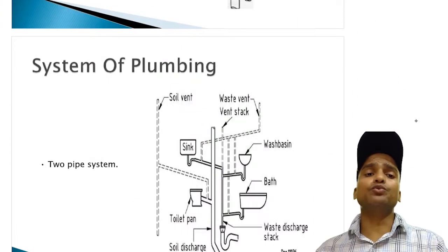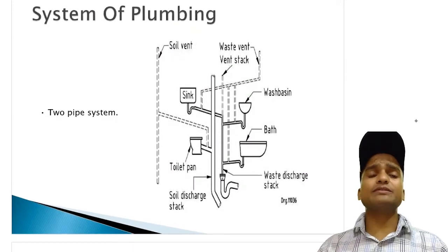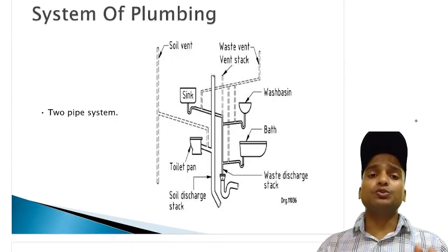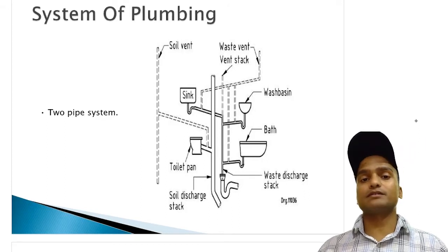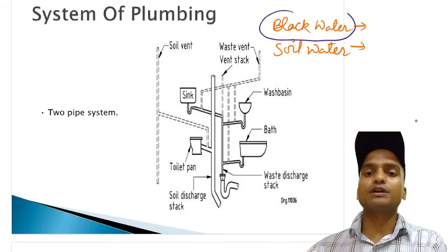The last system of plumbing is the two pipe system. And as the name suggests, we are going to use two different pairs of pipes, so overall we are going to use four pipes. Two pipes for black water and two pipes for soil water.